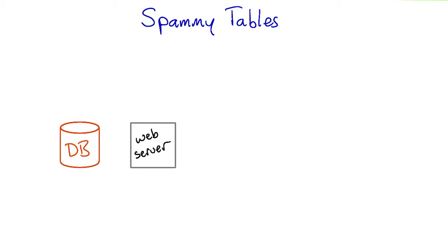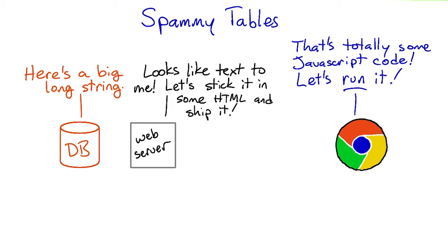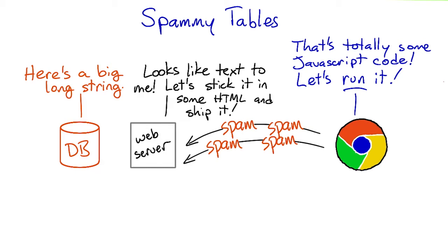Remember back in lesson one when I asked you to think about the meaning of data in particular columns? Well, here's a case where that's not an abstract concern at all. The forum program is treating each post as if it's just a piece of text. But your browser, on the other hand, is interpreting it with a different meaning — as a piece of code. This is another security problem a web app can have.